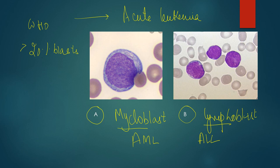The best test to differentiate between a myeloblast and a lymphoblast is immunophenotyping. But there are certain features that can help you identify and differentiate between these two cells on peripheral blood film as well as on bone marrow aspiration.